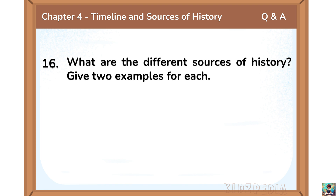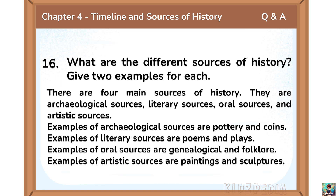What are the different sources of history? Give two examples for each. There are four main sources of history: archaeological sources, literary sources, oral sources and artistic sources. Examples of archaeological sources are pottery and coins. Examples of literary sources are poems and plays. Examples of oral sources are genealogical records and folklore. Examples of artistic sources are paintings and sculptures.